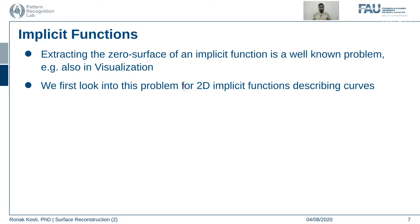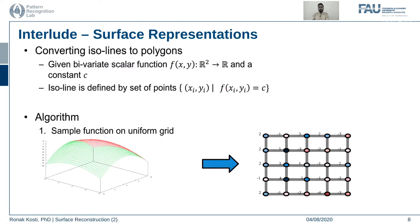Let's look a bit deeper into what implicit functions actually mean. We start with a problem on 2D surfaces — how to describe 2D curves — by defining iso lines and polygons.